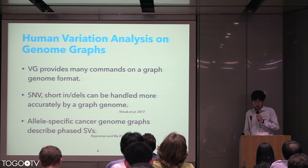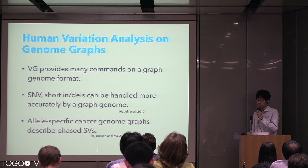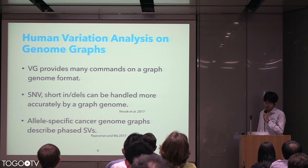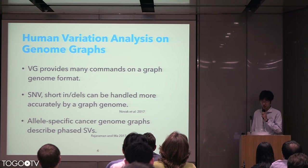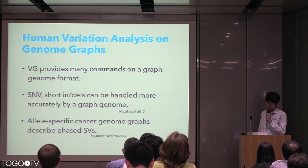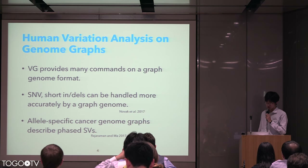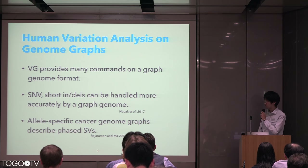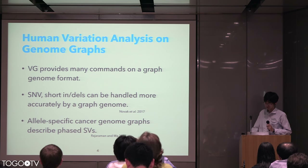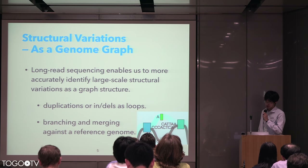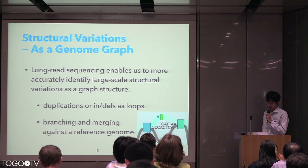In variation analysis, genome graphs have attracted attention from several years ago, and VG is the most important tool to manipulate genome graphs. This year, some papers about human variation analysis on genome graphs have been published. It is shown that single nucleotide variants and short indels can be handled more accurately by a genome graph. Also, tissue-specific cancer genome graphs are proposed to handle structural variation. Nowadays, long-read sequencing enables us to more accurately identify large-scale structural variation and fusion genes as graph structures.